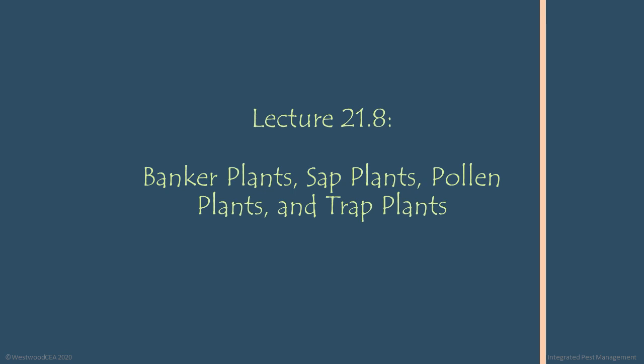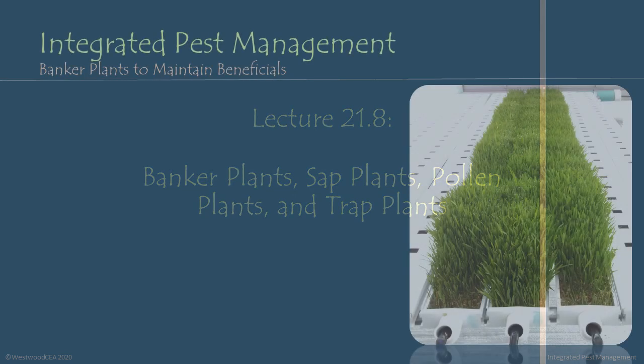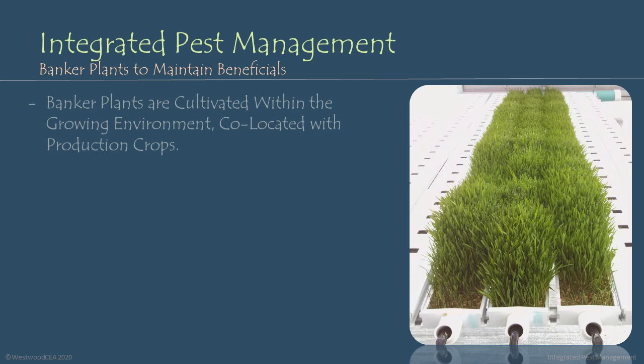The first type of beneficial plant we're going to look at is banker plants. Banker plants are cultivated within the growing environment and co-located with your production crops. In this photo, we see three NFT gutters growing wheatgrass to host an alternative aphid feed source for aphidious wasps.